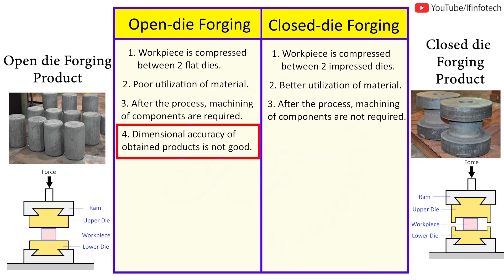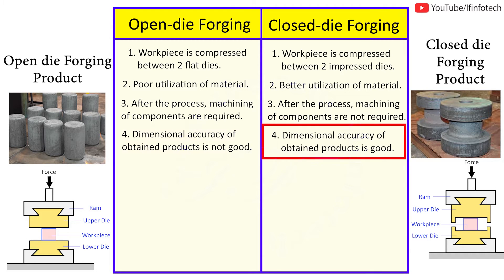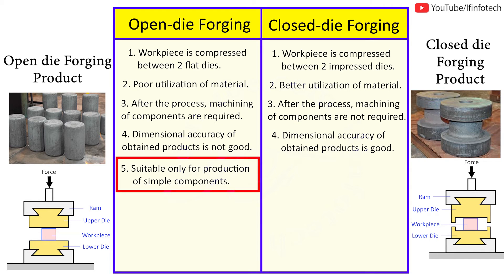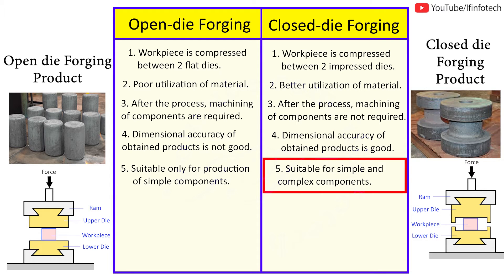The dimensional accuracy of the obtained product in open die forging is not good, whereas in closed die forging, dimensional accuracy is good. Open die forging is suitable only for production of simple components, whereas closed die forging is suitable for production of simple as well as complex components.